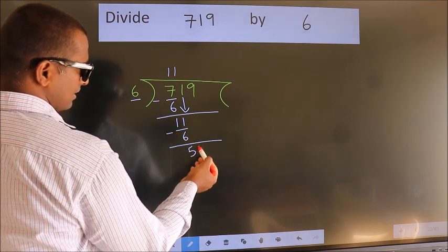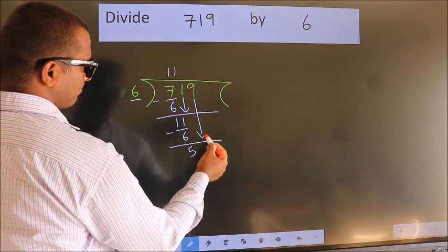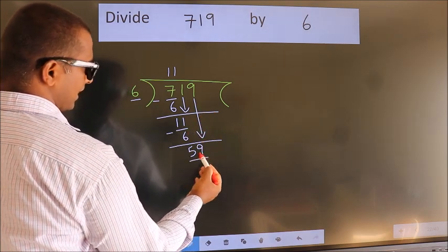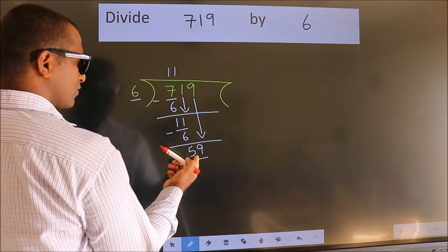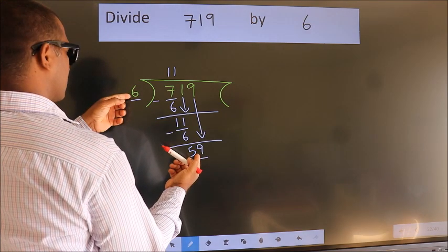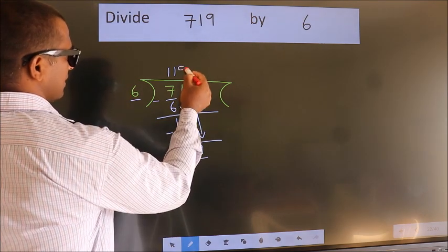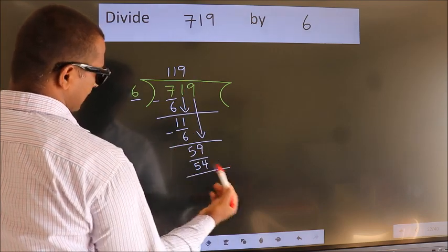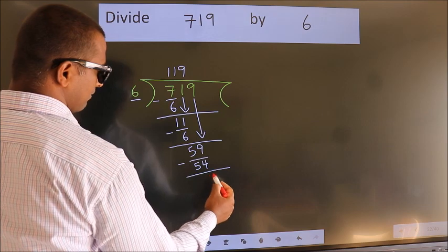After this, bring down the beside number. So 9 down, making 59. A number close to 59 in the 6 table is 6 nines 54. Now we subtract. We get 5.